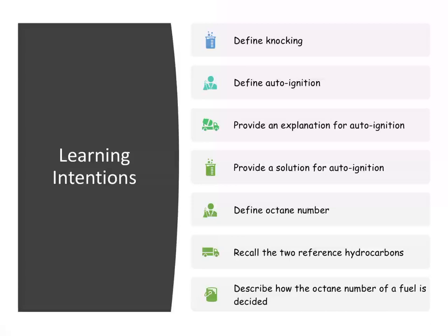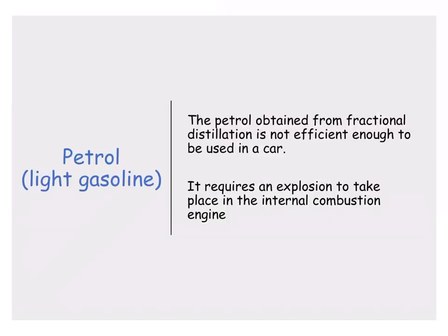In fuels and heats of reaction, we're going to be discussing what happens to the petrol from the fractional distillation column. We need to discuss what we would call knocking and auto ignition, describe what auto ignition is and how we can get around that, discuss octane number, and recall two reference hydrocarbons.